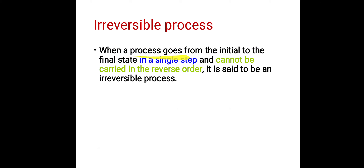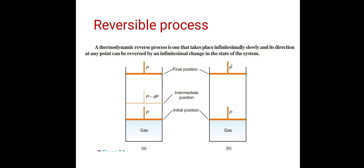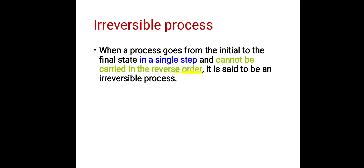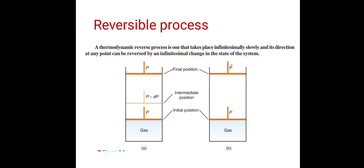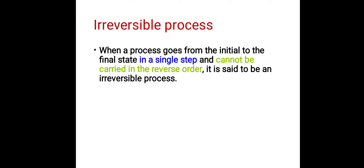The gas expands rapidly and goes to the final position. As per the definition, the process goes from the initial to the final state in a single step — the piston moves from its initial position to the final position in one step. The gas expands and cannot be carried out in the reverse order, so this is an irreversible process.